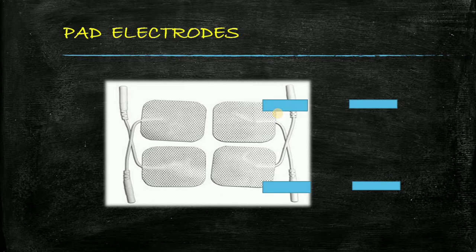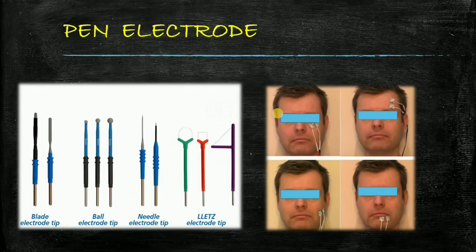Next is pen electrode. Pen electrodes are usually used to stimulate the muscles. You can see in this picture there are various type of pen electrodes available. They are used to stimulate the muscles. You can see in this picture there are pen electrodes which stimulates the muscles of the face.